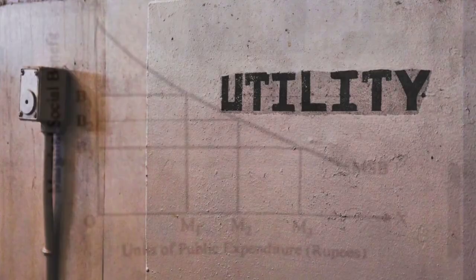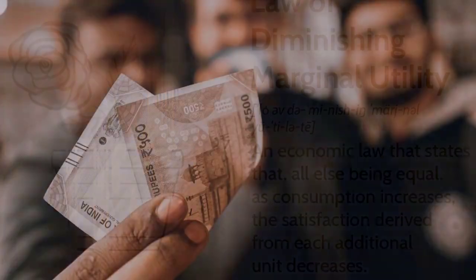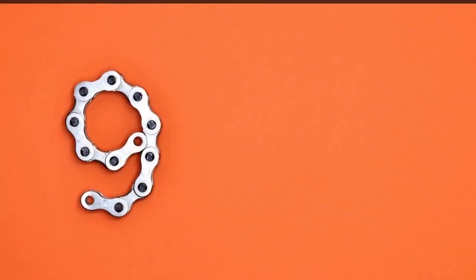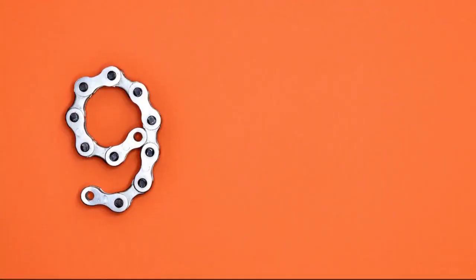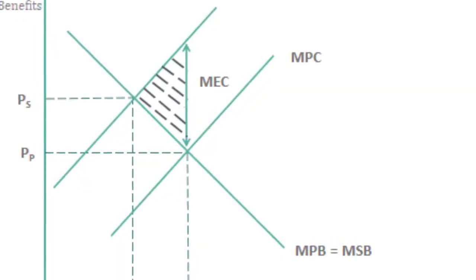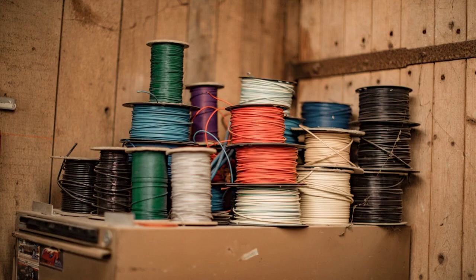Principle of Diminishing Marginal Utility: Understand the concept of diminishing marginal utility. As the government spends more, the additional benefits per unit of expenditure decrease. Consumer Analogy: Relate it to being a consumer — the more units of a product you have, the less satisfaction each additional unit brings.